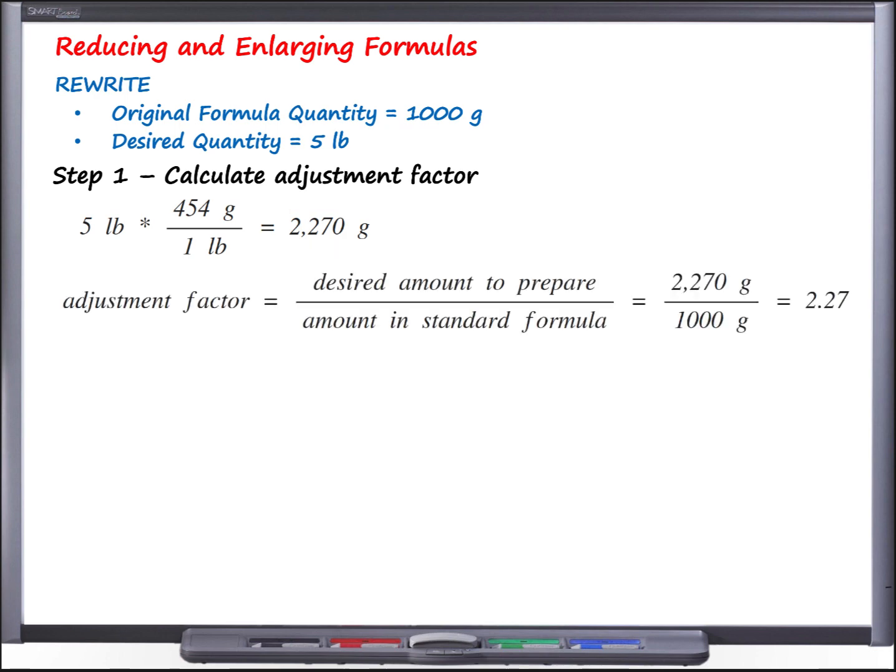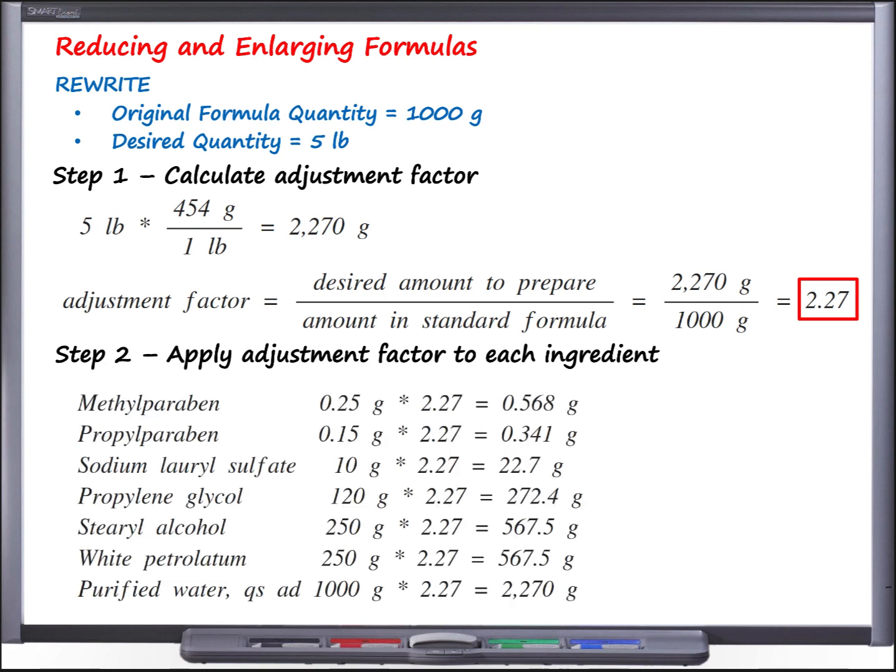Now that I know that, I can calculate my adjustment factor. We do that by taking the amount we desire to prepare and put it on top and divide it by the amount called for in the original formula, which was 1,000 grams. When we divide those two numbers, we see that our adjustment factor is 2.27. That means we are wanting to prepare 2.27 times the amount called for in the original formulation. The next step is simply to apply this adjustment factor to each ingredient. I've listed all of the ingredients here, and these are solved the same way for all of them. We take each original amount and multiply by the adjustment factor of 2.27, and we get the final amount that we would need to use to prepare 5 pounds of this hydrophilic ointment.